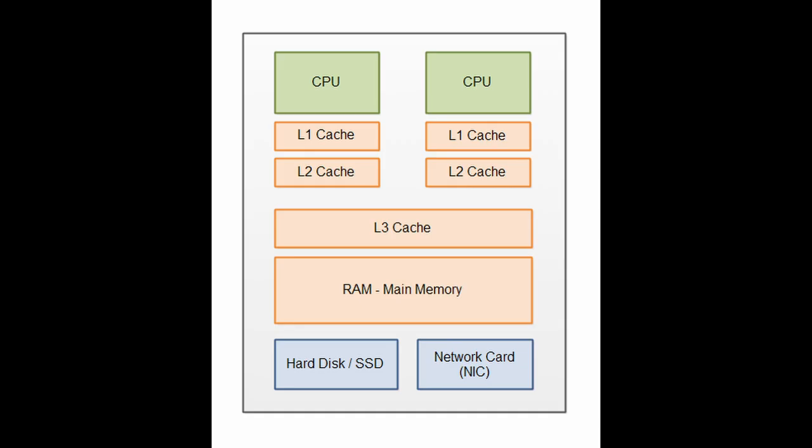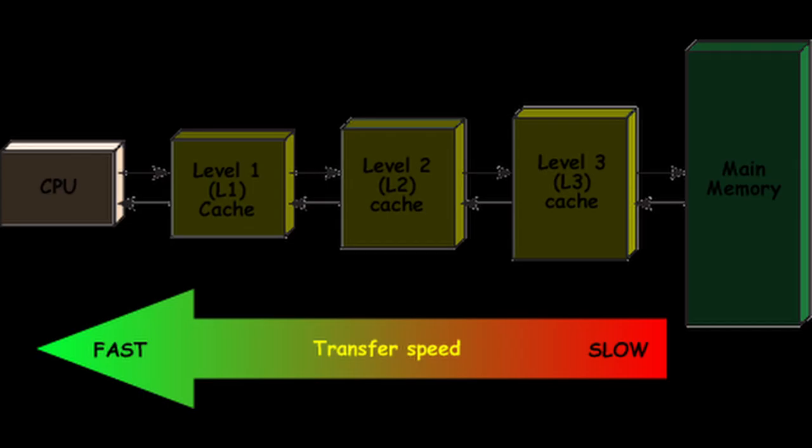The history of cache. CPU cache, also known as a processor cache, is a small amount of memory built directly into the central processing unit of a computer. The cache is designed to store frequently accessed data and instructions, allowing the processor to quickly access them instead of retrieving them from slower memories such as RAM or the hard drive. The CPU cache consists of multiple levels, typically L1, L2, and L3, with each level being larger and slower than the previous one. The L1 cache is the smallest and fastest, while the L3 cache is the largest and slowest.